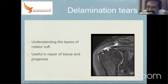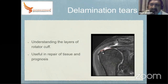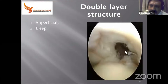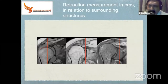In reality, this is how a delamination tear looks in arthroscopy — you can see the superficial layer and the deep layer. When communicating a cuff tear to colleagues, you should measure it in centimeters anterior-to-posterior and medial-to-lateral. Use landmarks such as the acromioclavicular joint, the tip of the acromion, and beyond the AC joint.